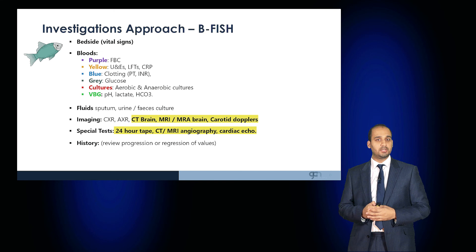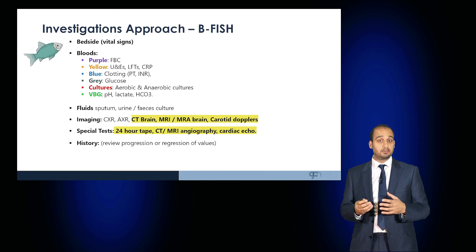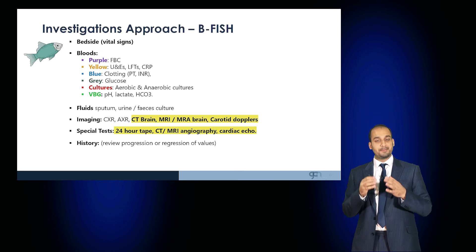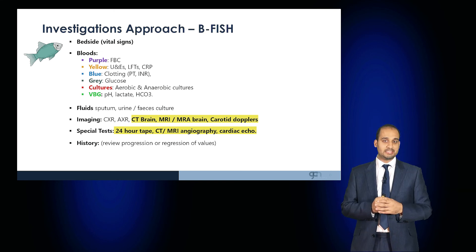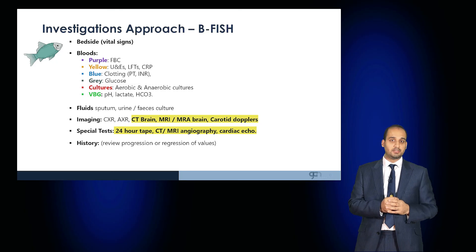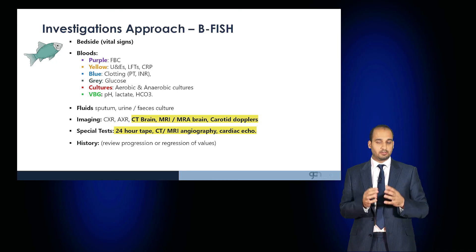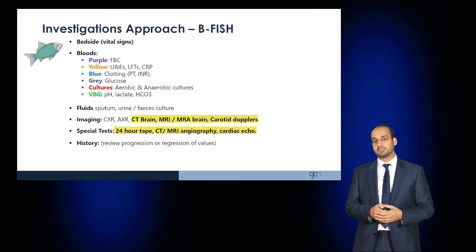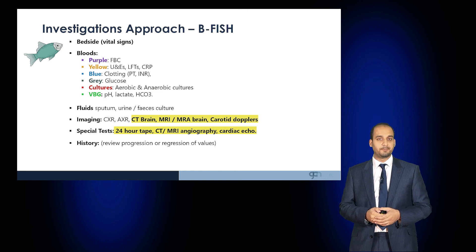Investigations for patients with stroke include a range of blood tests, but importantly urgent CT brain scans, MRI, and carotid dopplers, as well as assessment of cardiac function looking for signs of thrombus. A 24-hour tape looks for paroxysmal atrial fibrillation, and an echocardiogram looks for features that may predispose the patient to developing a blood clot.